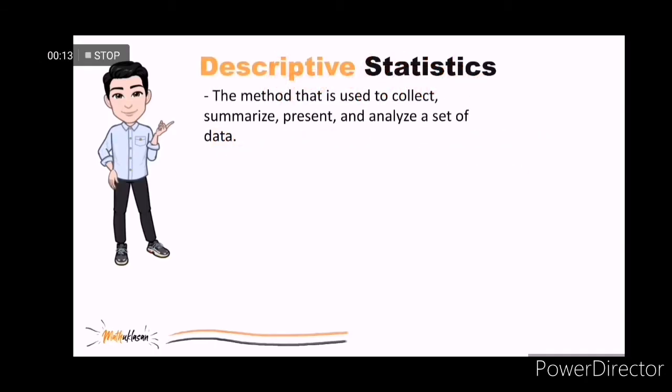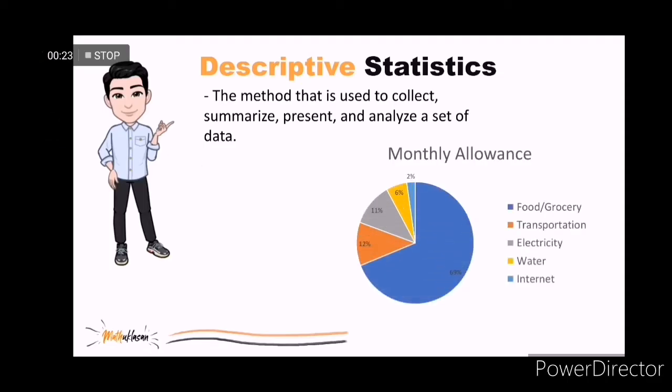Descriptive statistics is the method that you use to collect, summarize, present, and analyze a set of data. For instance, describing the allocation of your monthly allowance.